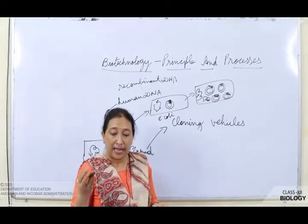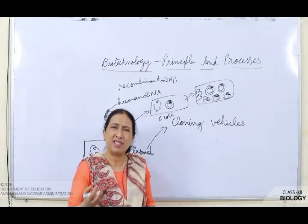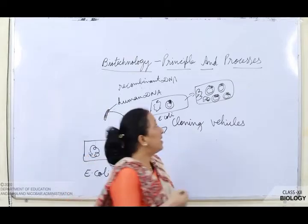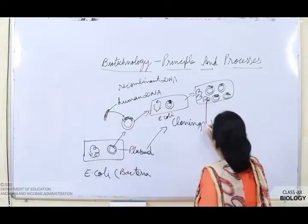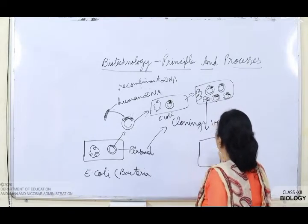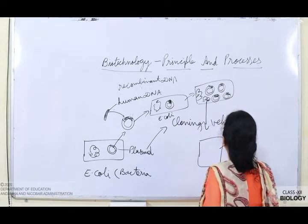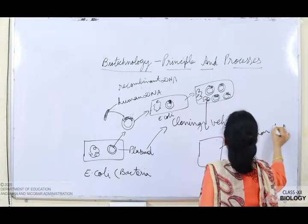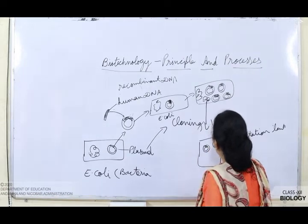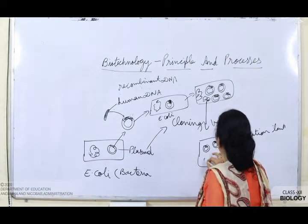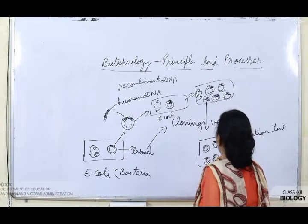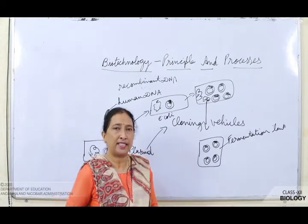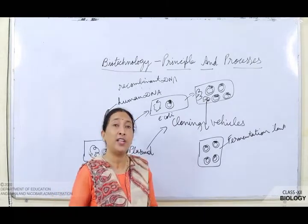If we are preparing medicines like syrups, we need a huge amount. So this is again put in a culture media — that is a fermentation tank. This recombinant DNA is placed in large fermentation tanks where antibiotics or any medicine can be synthesized in huge amounts.